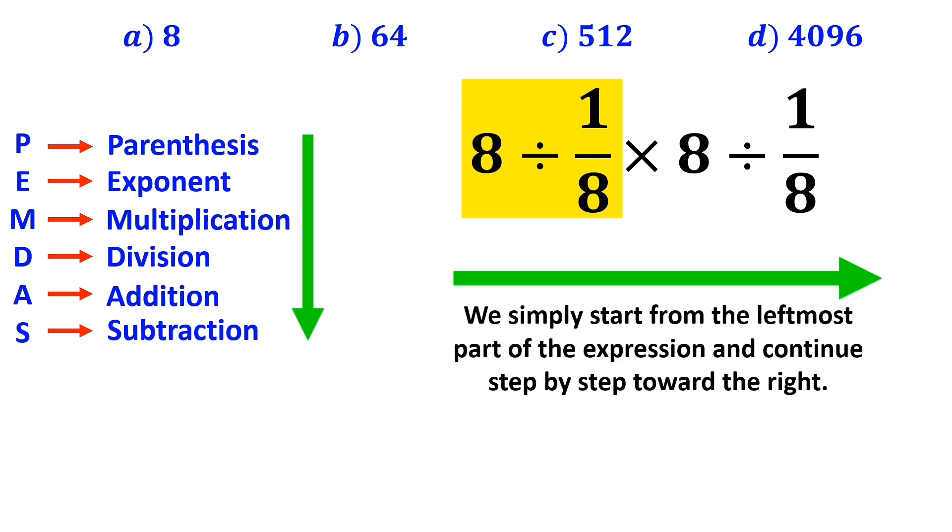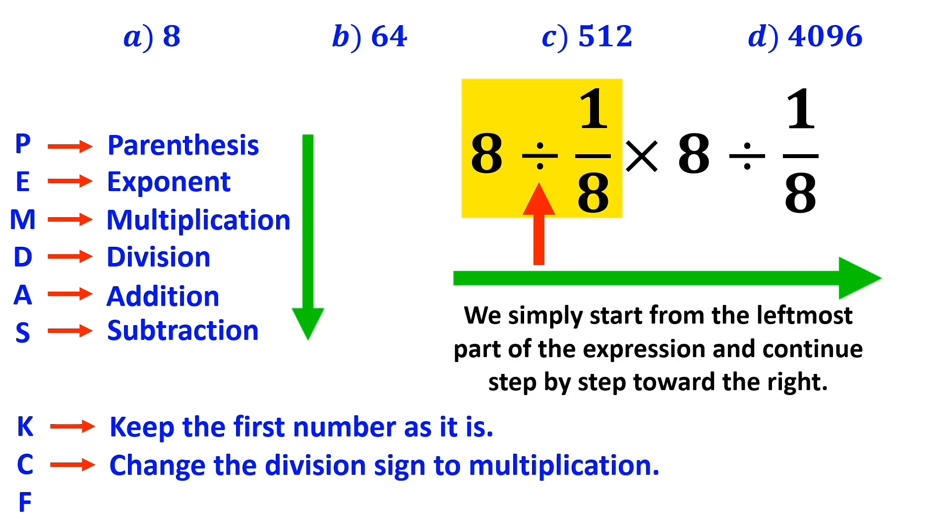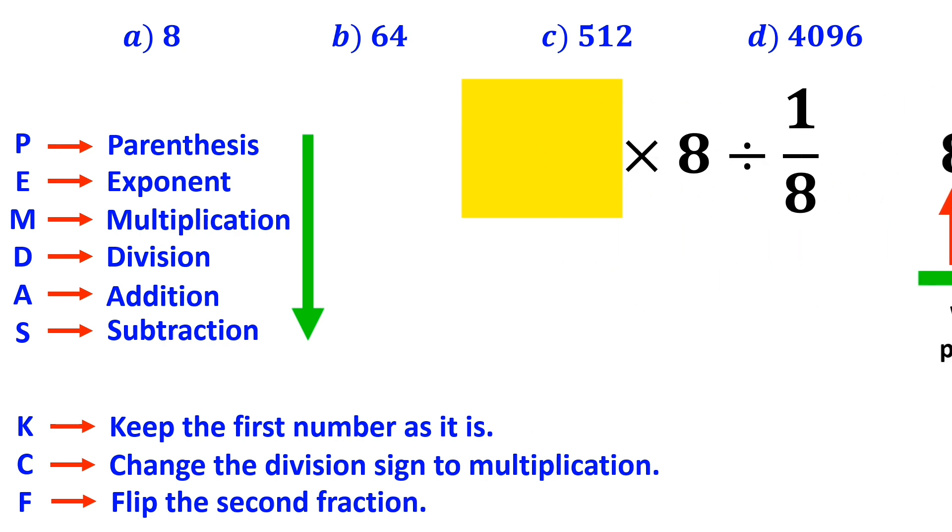Whenever we come across a division sign between two terms, the best thing to do is to apply the KCF rule. In this rule, K stands for keep the first number as it is. C stands for change the division sign to multiplication, and F stands for flip the second fraction. We remove the highlighted part and replace it with 8 times 8.